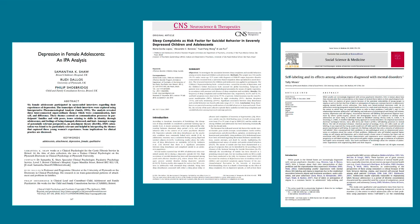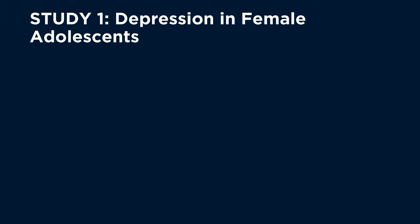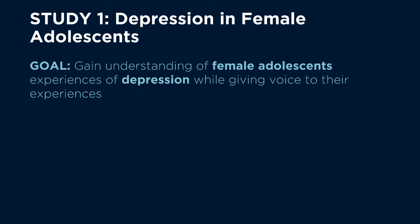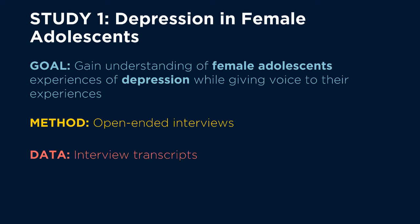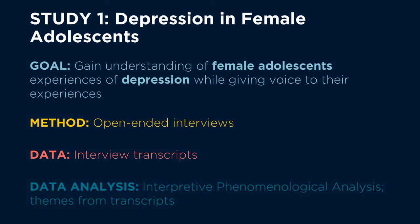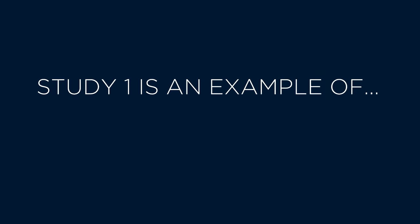Let's take a look at some examples. Here are three studies about adolescent mental health. We'll focus on their goals, methods, data, and data analysis techniques to determine if they are quantitative or qualitative. Our first study is about depression in female adolescents. The goal of this exploratory study was to gain an understanding of female adolescents' own experiences of depression and give voice to their experiences. The method was six open-ended interviews regarding participants' experiences of depression. The data consisted of interview transcripts, and the article includes quotes from the interviews. The data analysis technique was interpretive phenomenological analysis, in which researchers distilled themes from the interview transcripts. This is an example of a qualitative study.